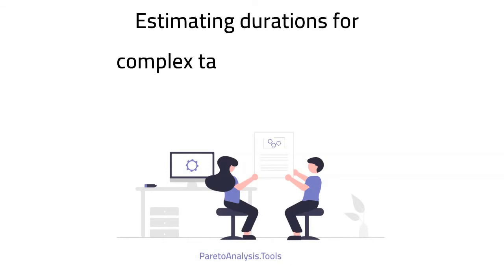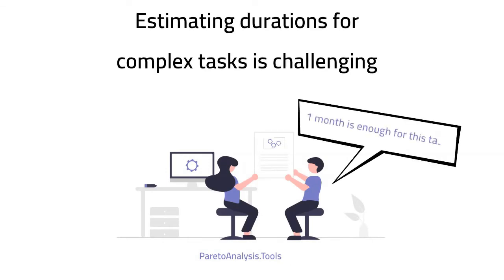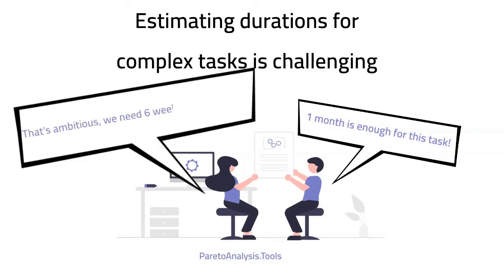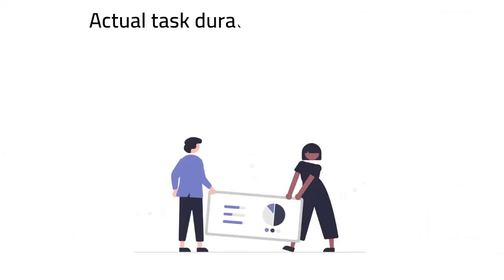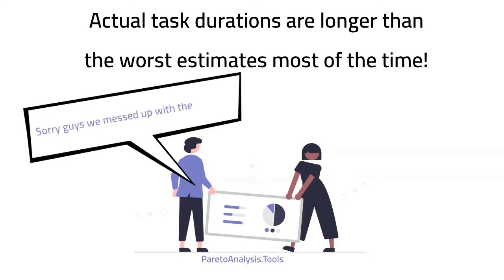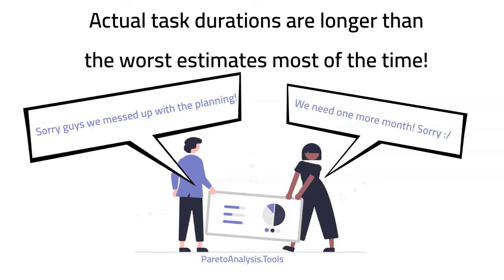These two examples are complex projects and perfect illustrations of Hofstadter's law. Hofstadter's law is basically a thorough statement of the extreme difficulty of accurately estimating the amount of time it will take to complete complex tasks. This extreme difficulty leads most of the time to effective task durations being longer than the worst estimates.